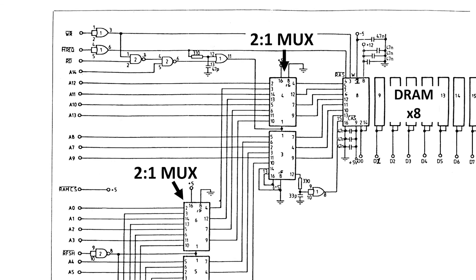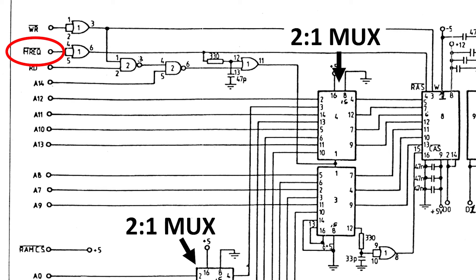The timing for RAS comes directly from the MREQ bar signal from the CPU, which is active during memory accesses and during refresh, while CAS is generated by a read or a write when A14 is set. There is a delay before the top multiplexer switches, which is caused by this resistor capacitor delay circuit, and then the actual CAS signal is delayed a bit further with the use of a second RC delay.